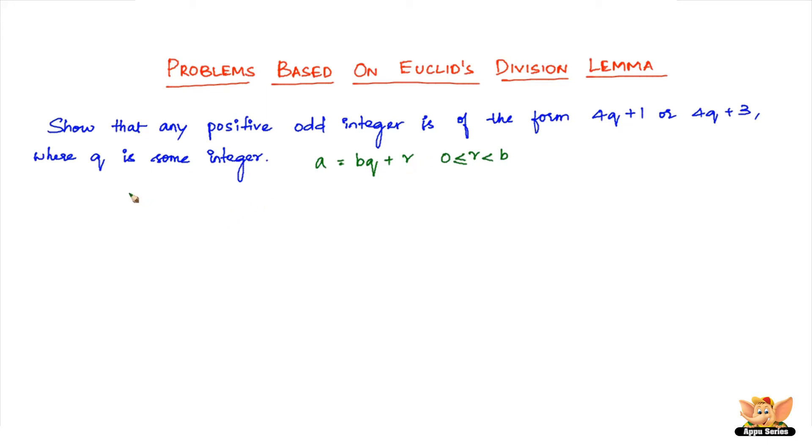Now what we need is 4q+1 or 4q+3. In the equation Bq+R, we need B to be 4 and R to be 1 or 3.